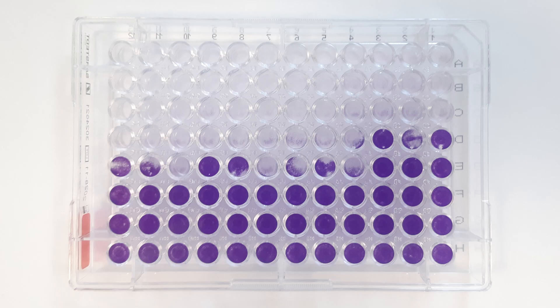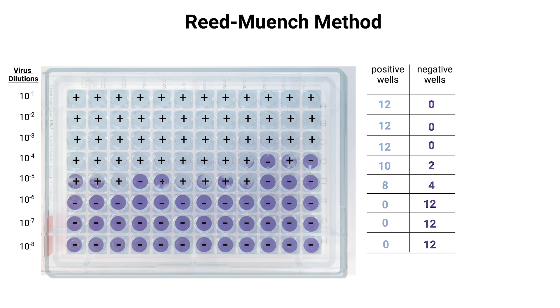Here you can see the image of a 96-well plate used to determine the TCID50 of a virus stock. We have stained our cells with crystal violet, which visualizes the cells present in the wells. In those wells without purple staining, the cells have been wiped out by the virus. Now let's analyze our plate data. By visual inspection, we record the number of wells that show infection — positive wells — and those that do not show infection — negative wells — for each dilution.